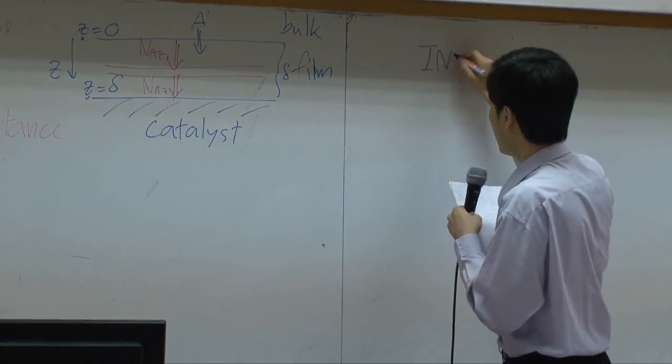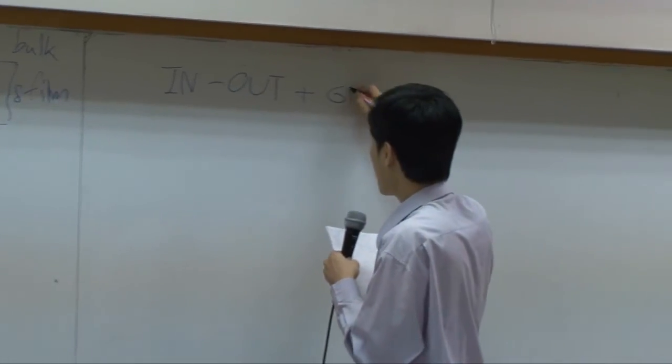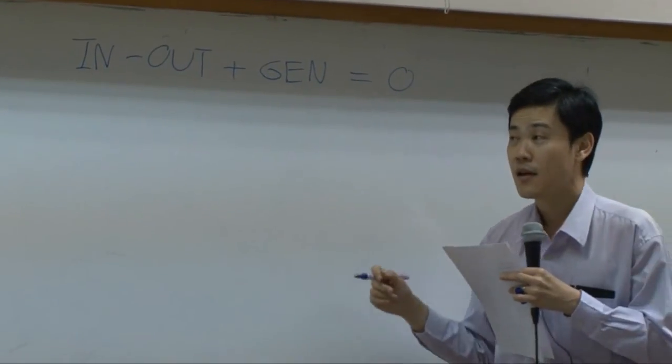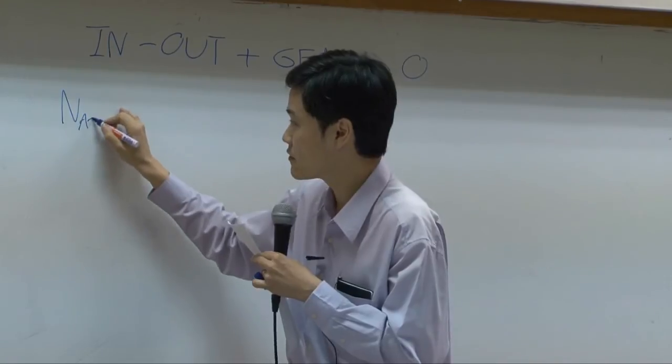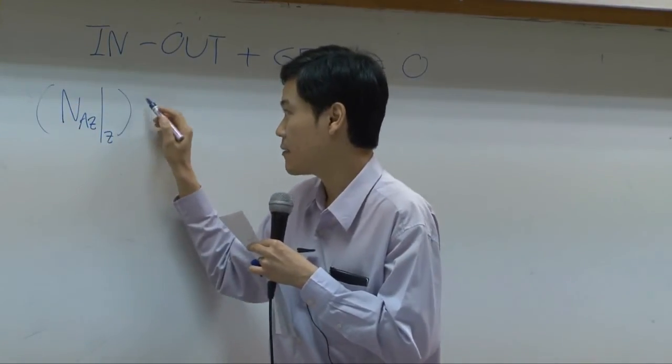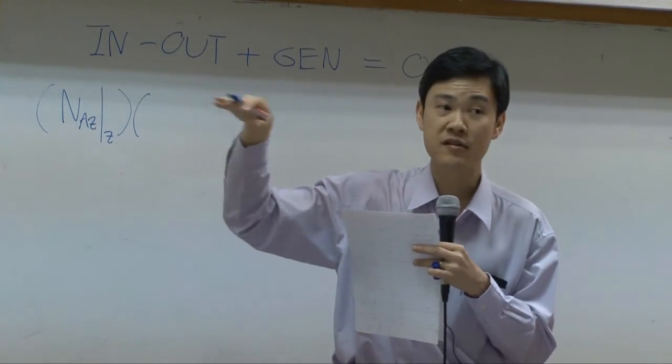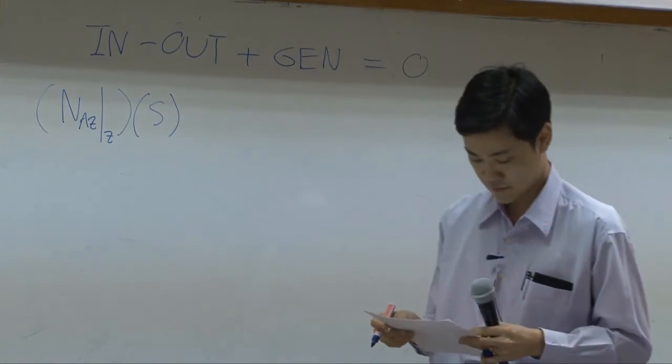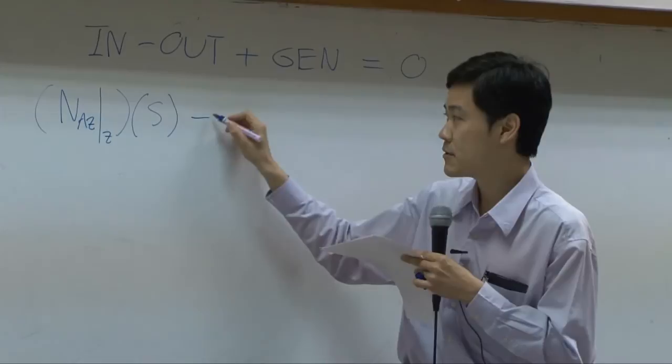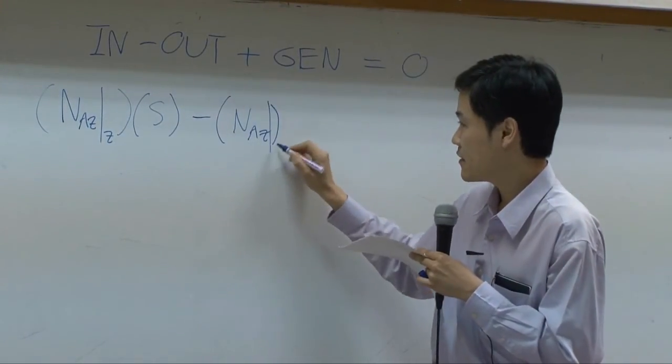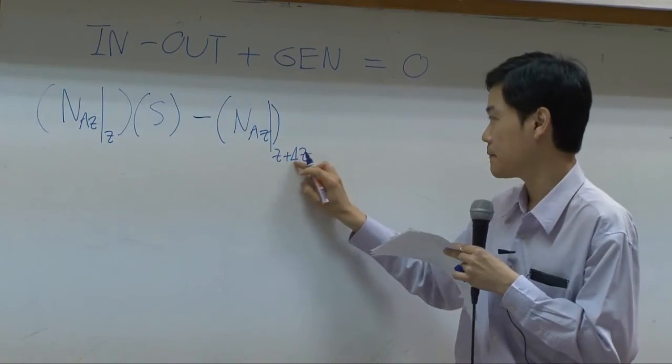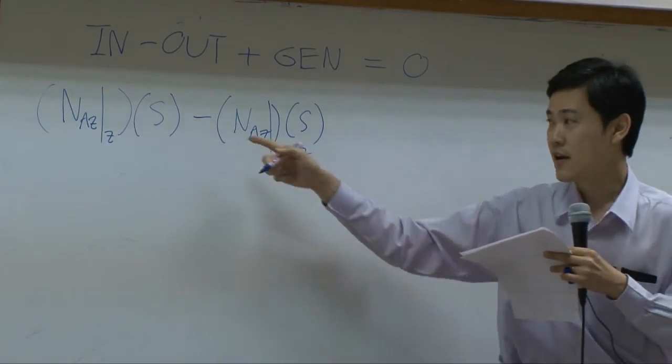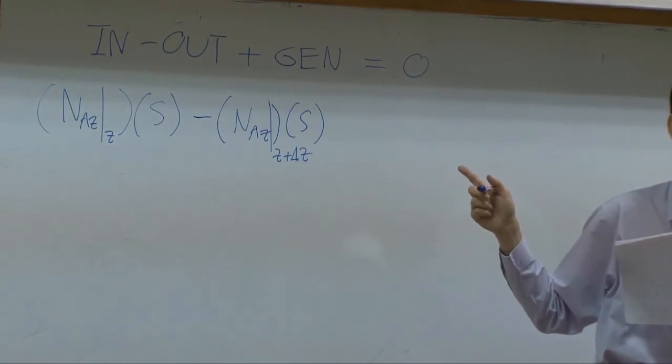Let's call this one NAZ. So from shell balance, in minus out plus generation equal to zero, zero at steady state. Input in this case would be flux at Z multiplied by cross-section area or the surface area of the catalyst itself. If it is called S, output would be NAZ taken at Z plus delta Z times S as well. As long as we neglect the curvature, S here and S there becomes the same.